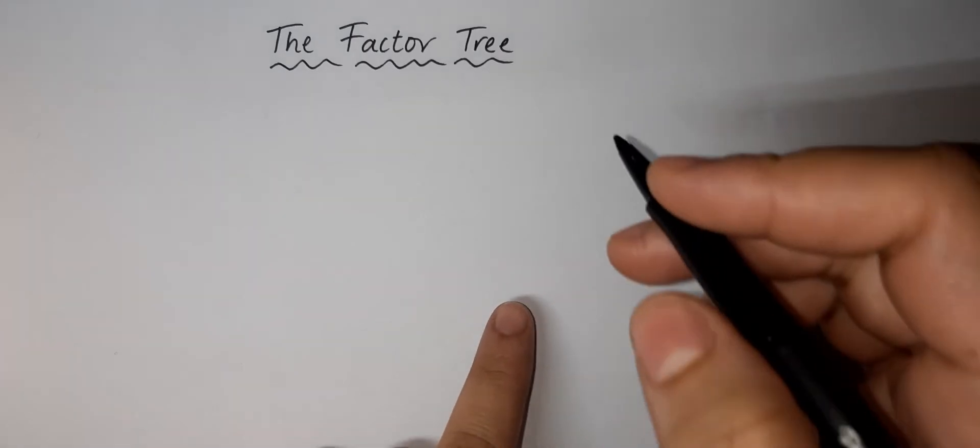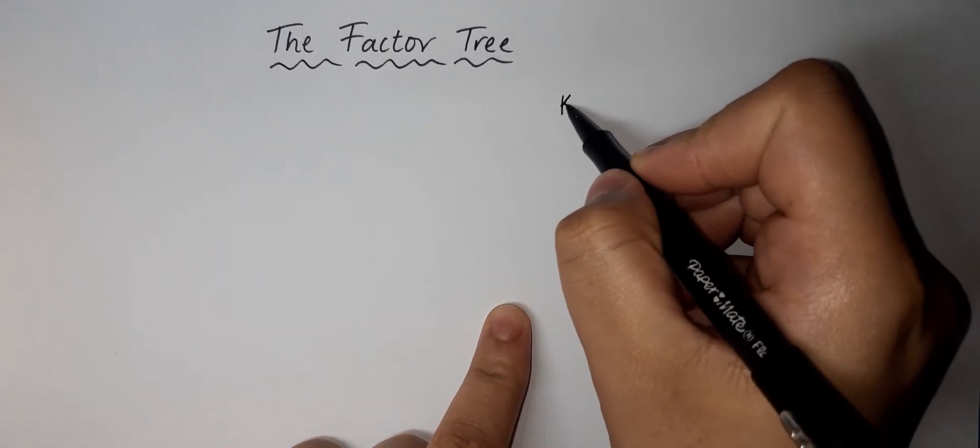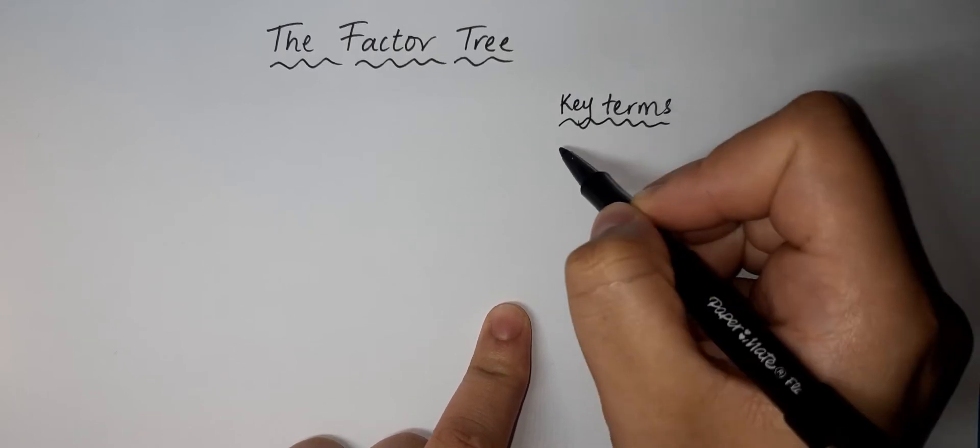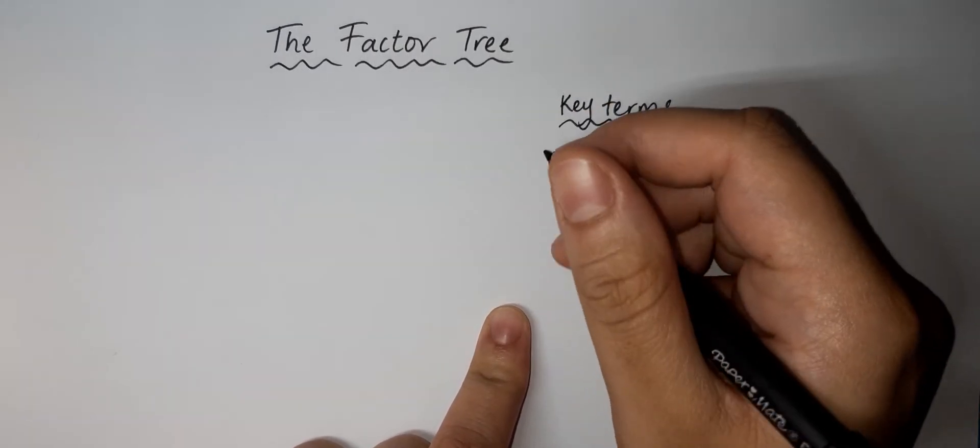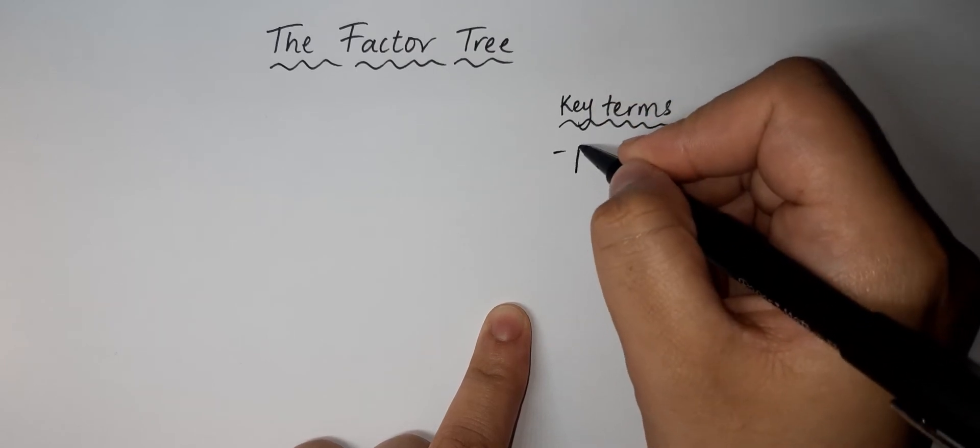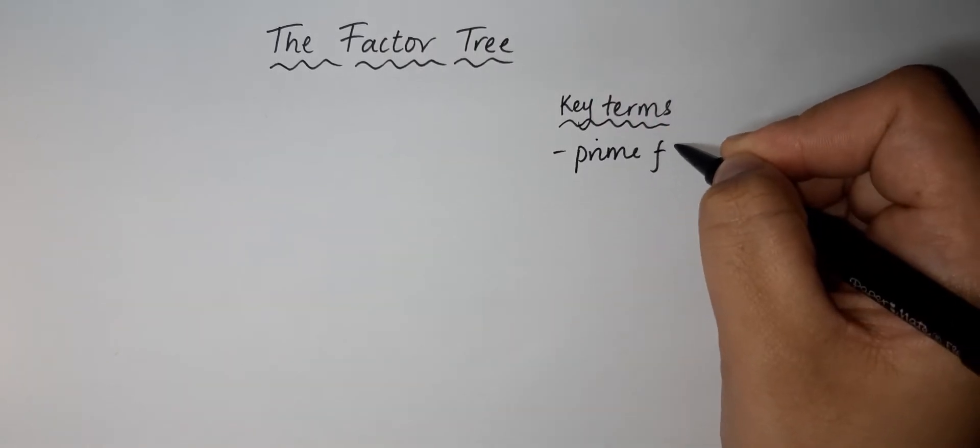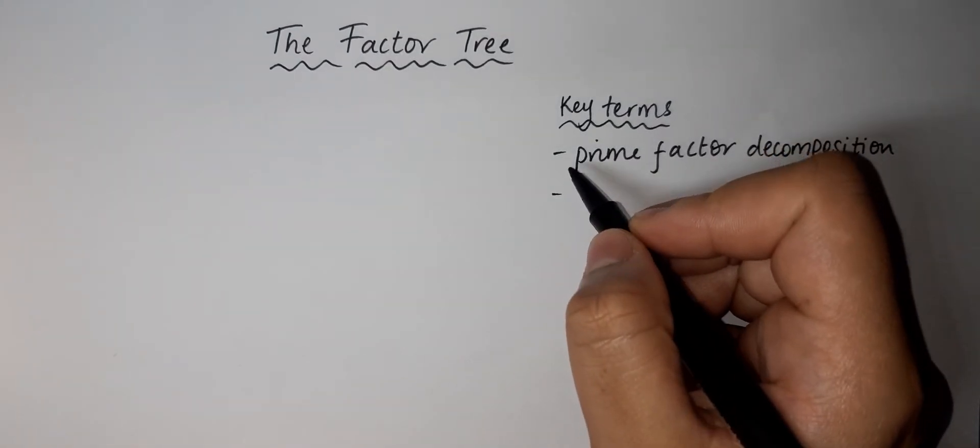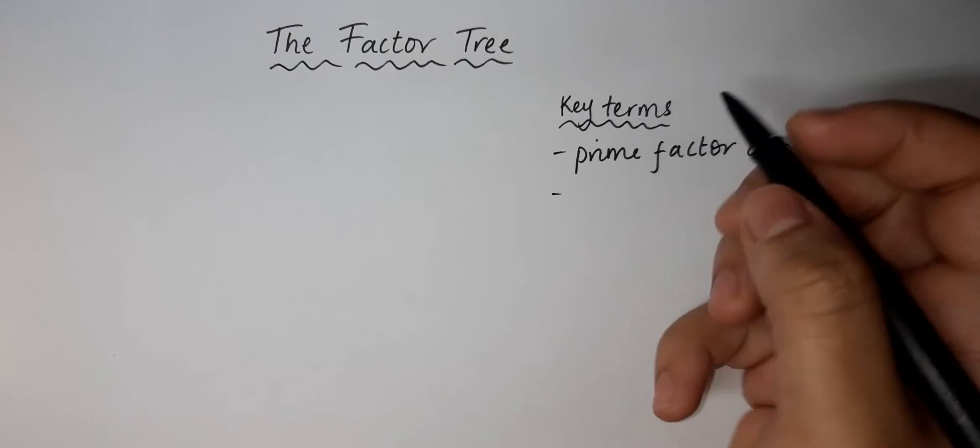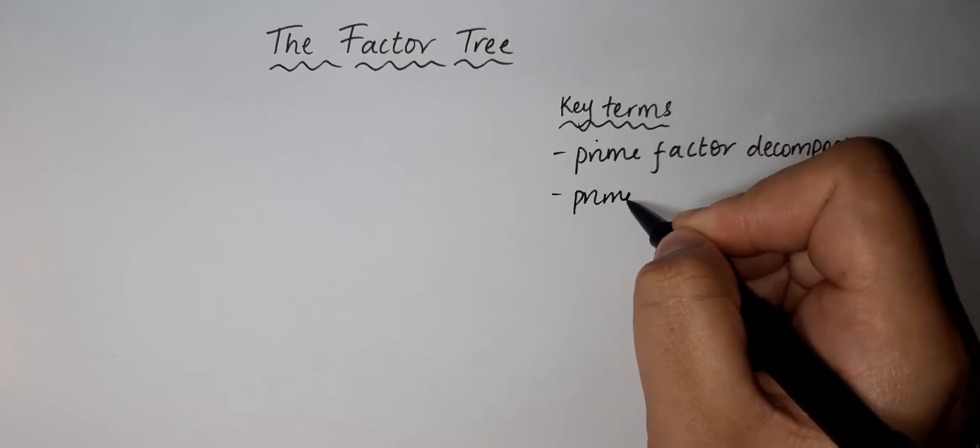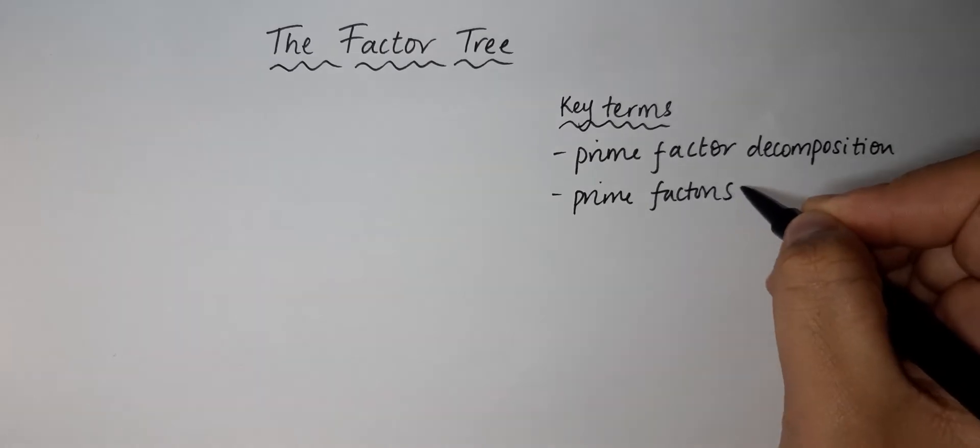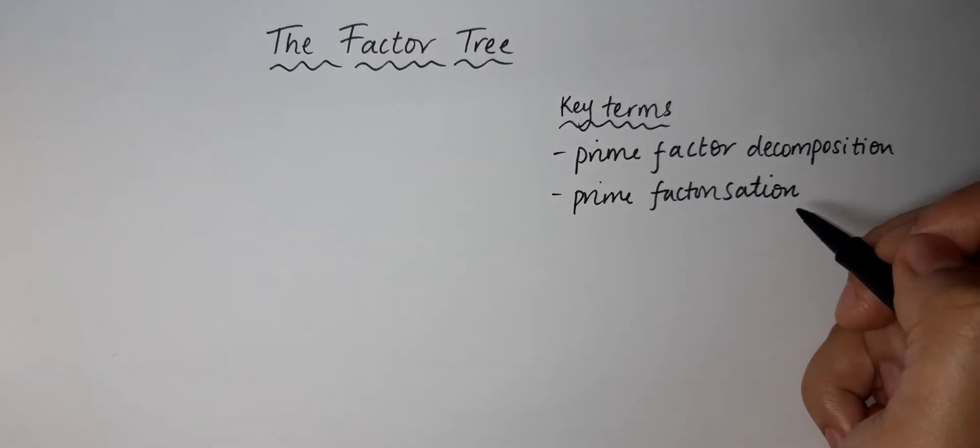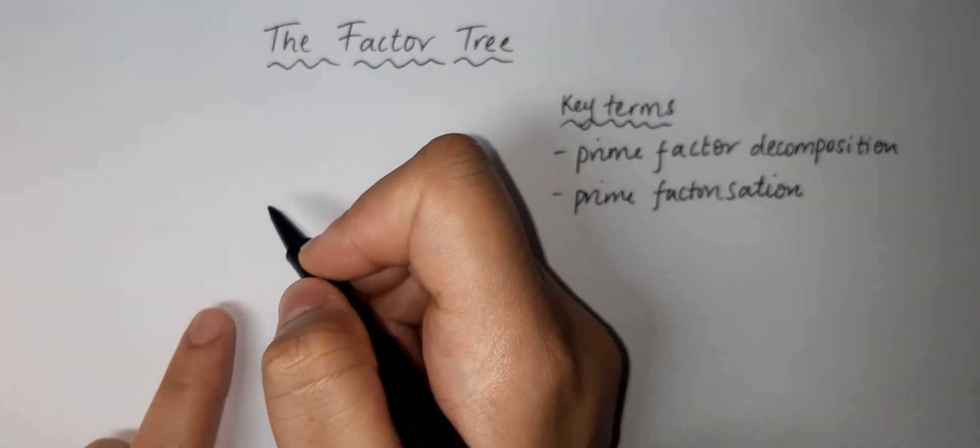We can use two key terms here: prime factor decomposition and prime factorization. So what a factor tree actually looks like is, if we have an example here...